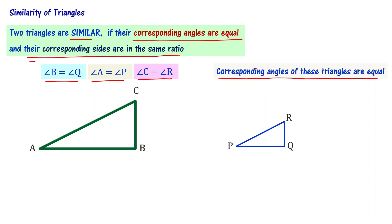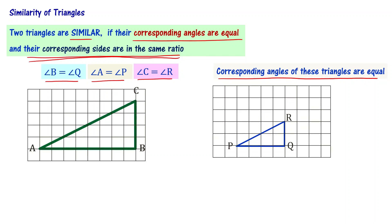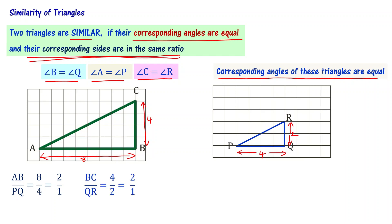Now let's look at whether the corresponding sides are in the same ratio. We take the measures of the sides of these triangles. PQ is of length 4 units, AB is 8 units, BC is 4 units, and QR is 2 units. So AB by PQ is 8 by 4, which equals 2 by 1. BC by QR is 4 by 2, which also equals 2 by 1. Therefore AB by PQ equals BC by QR.